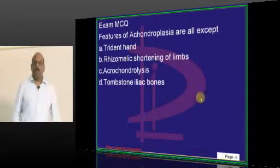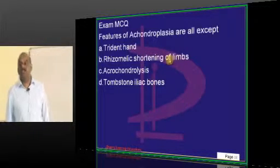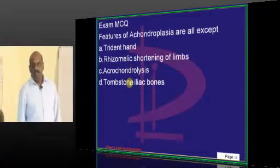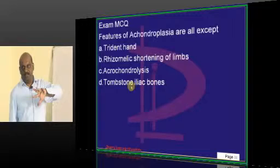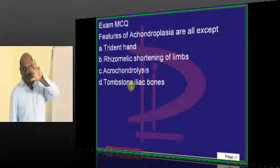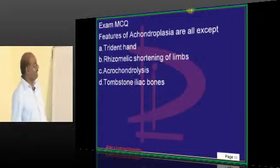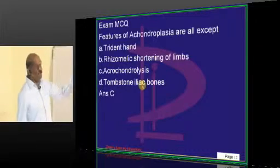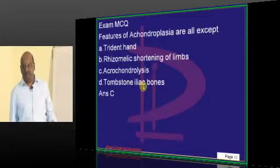What are the features of achondroplasia? They have a typical trident hand where all three fingers are at the same level. There is also rhizomelic shortening of the limbs and tombstone-like iliac bones, which we will review in radiology.